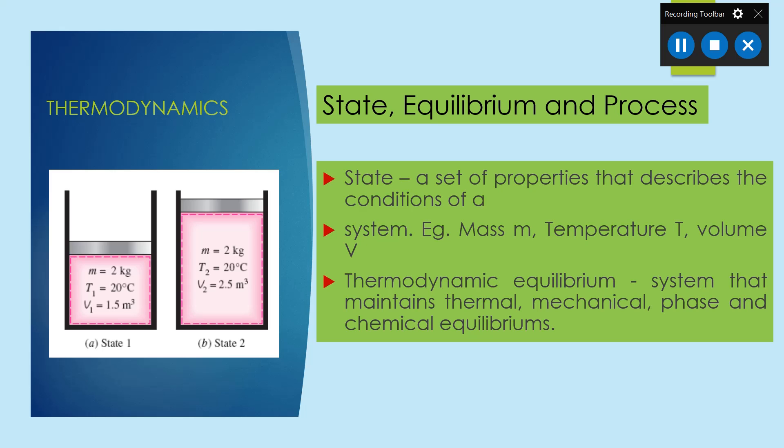Thermodynamic equilibrium is when a system maintains thermal and mechanical equilibrium — that is known as a system under thermodynamic equilibrium. A process is what happens when a system transfers from one state to another state. When a system changes from state 1 to state 2, some process takes place — that is known as the process of a system. So state, process, and equilibrium are key concepts of a system. That's all for today, and we will discuss another topic in the next class. Thank you.